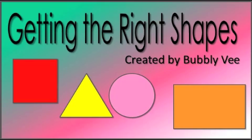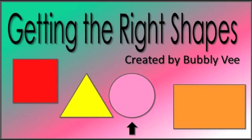Hi, this is Ms. Bubbly V. We're going to talk about a square, a triangle, a circle, and a rectangle. And these all are shapes.